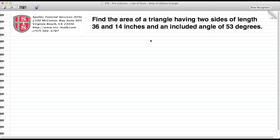Let's take a look at this question: Find the area of a triangle having two sides of length 36 and 14 inches and an included angle of 53 degrees.